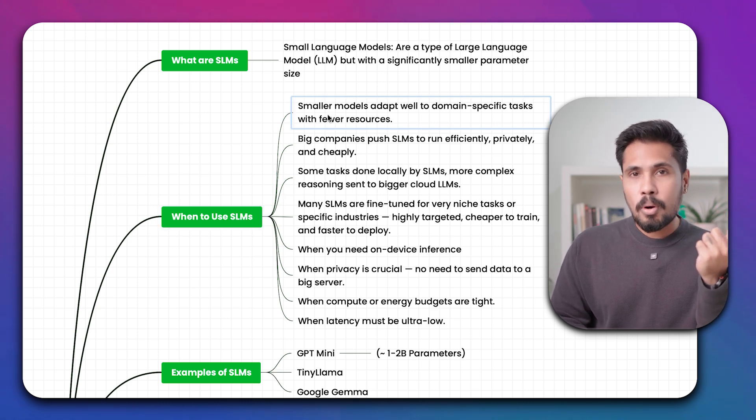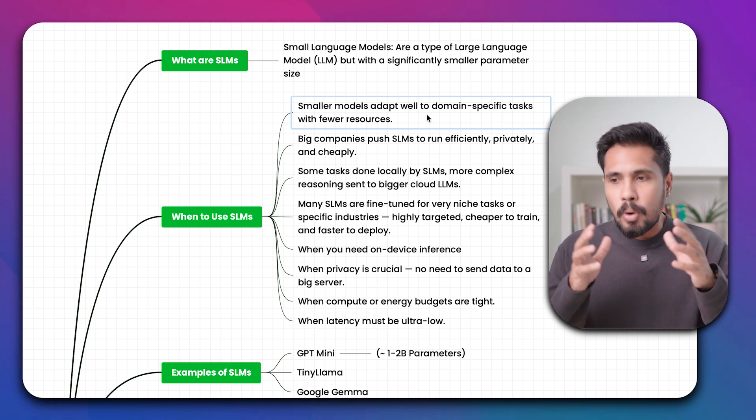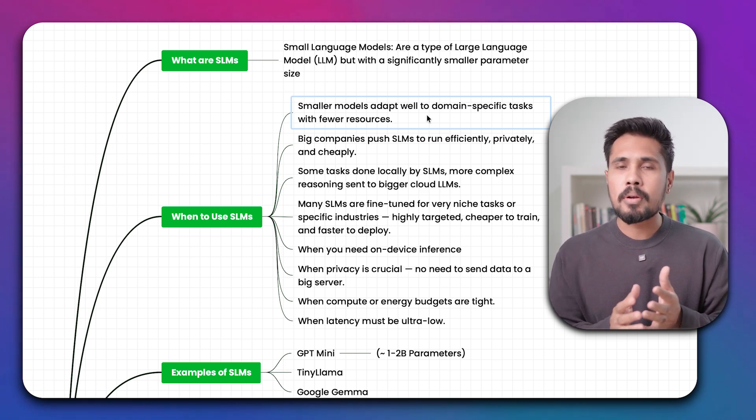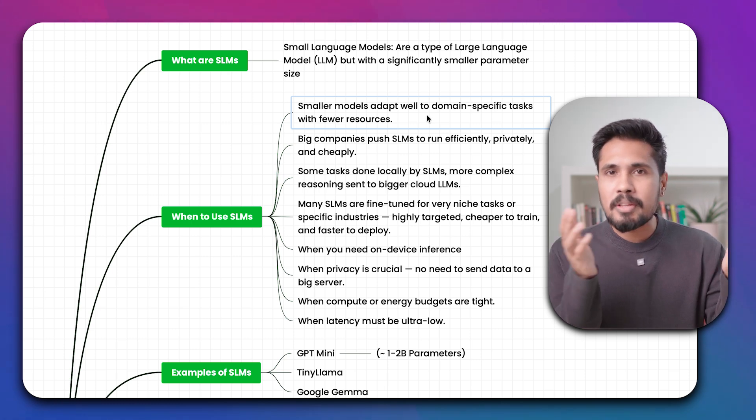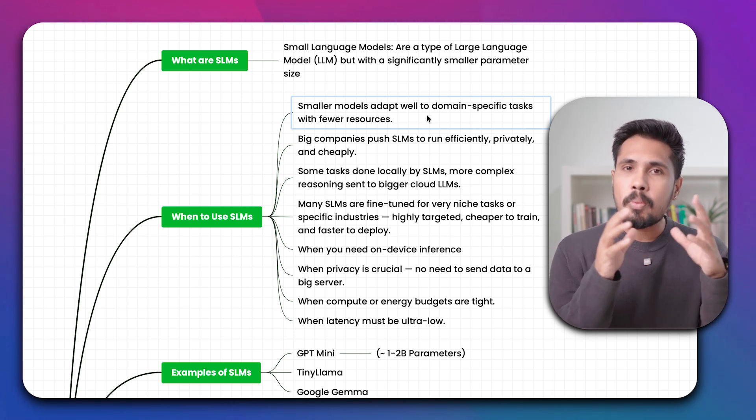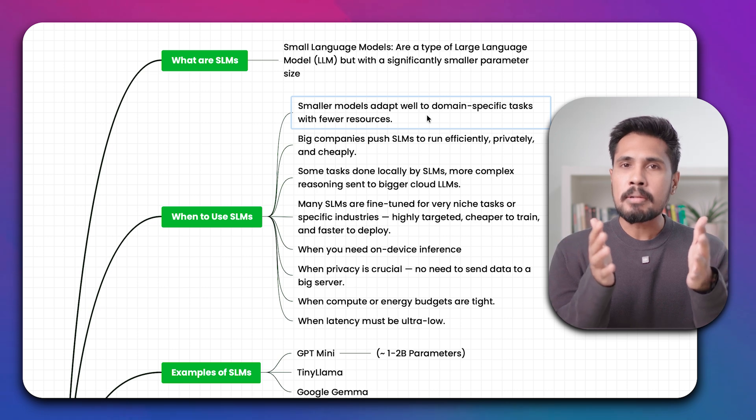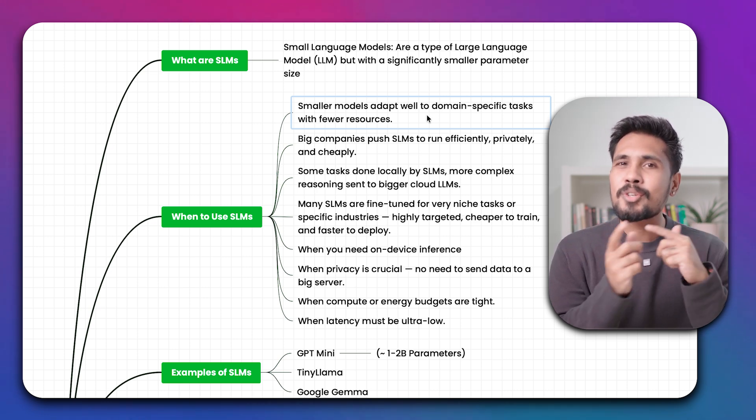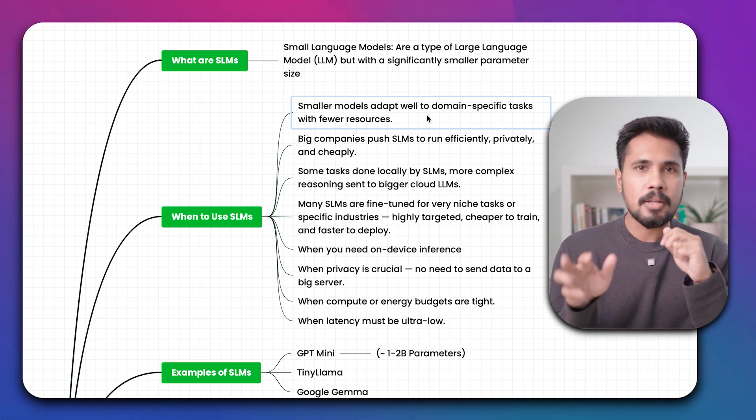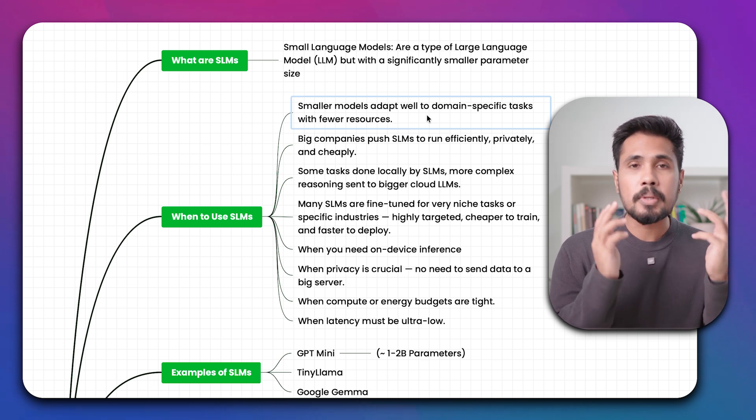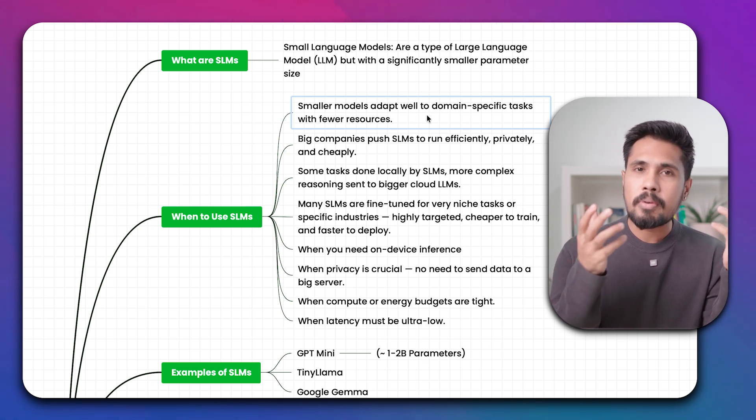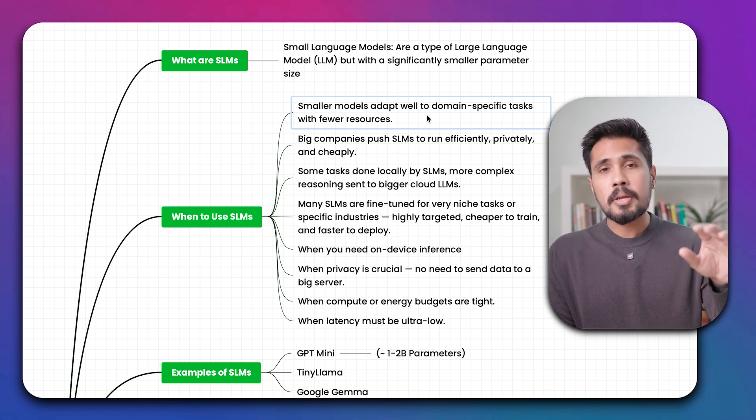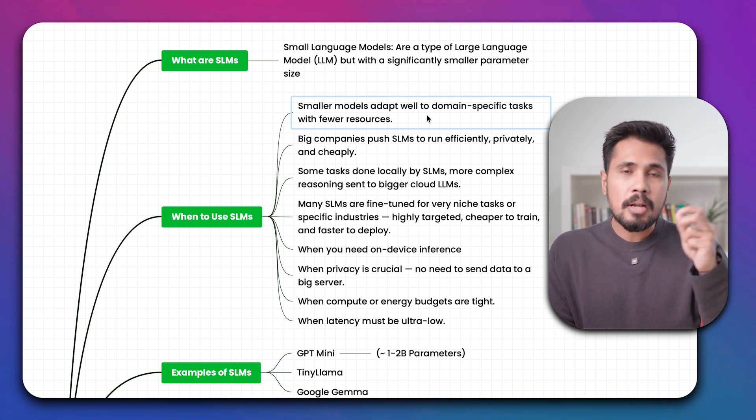Why or when to use SLMs? The first reason is smaller models adapt well to domain-specific tasks. For example, I want to customize my particular LLM model. I cannot build an LLM. For a company, I'm working with a financial organization. They want to use their entire PDF files as a knowledge repository. Someone is going to do question and answering with respect to financial documentation. We try to take an LLM model and do RAG architecture.